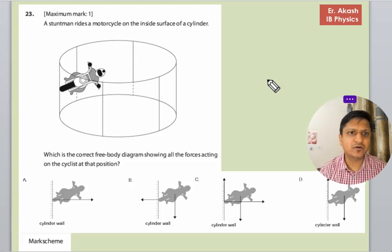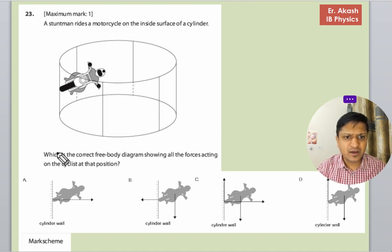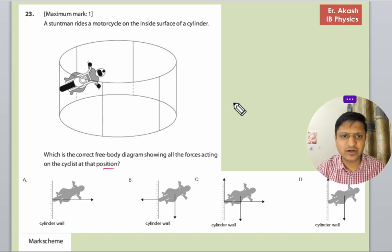We have a question here. The question says that a stuntman rides a motorcycle on the inside surface of a cylinder like this. Which is the correct free body diagram showing all the forces acting on the cyclist at that position? Basically, we have to draw the free body diagram.